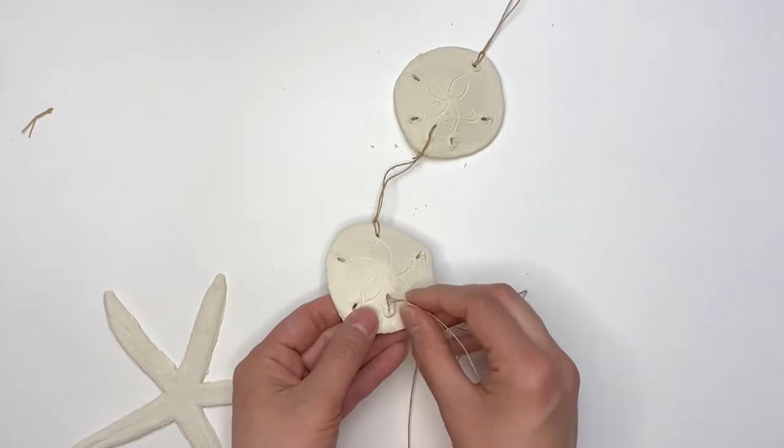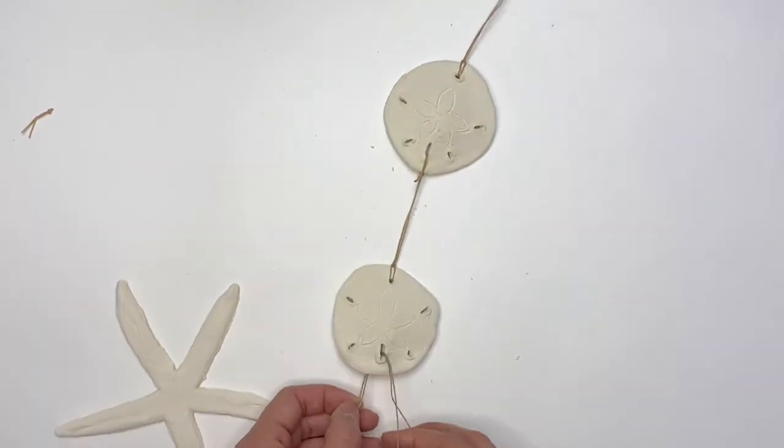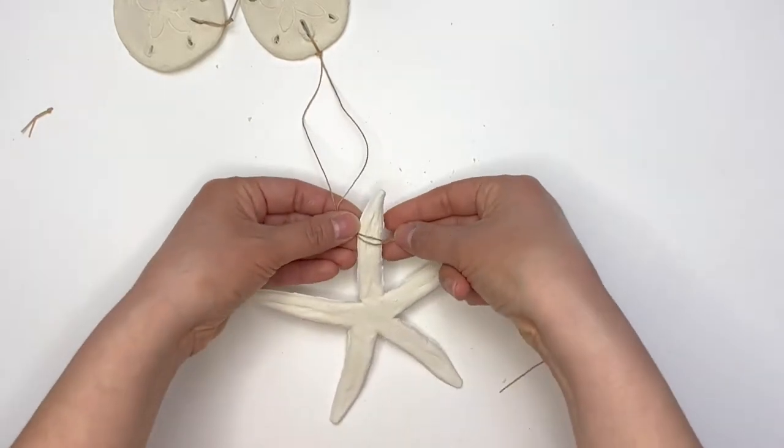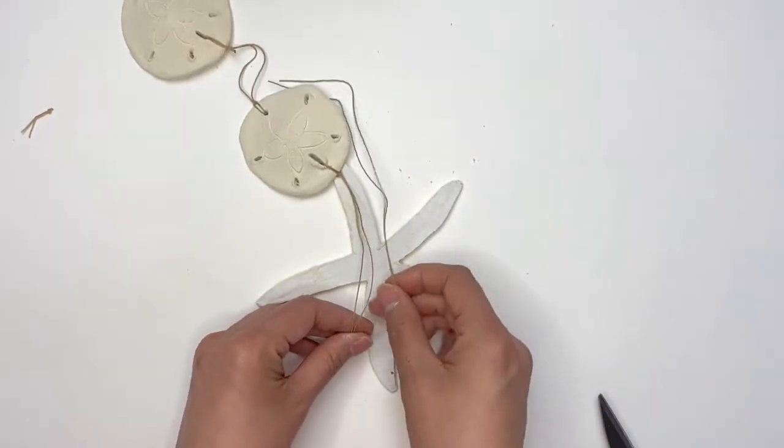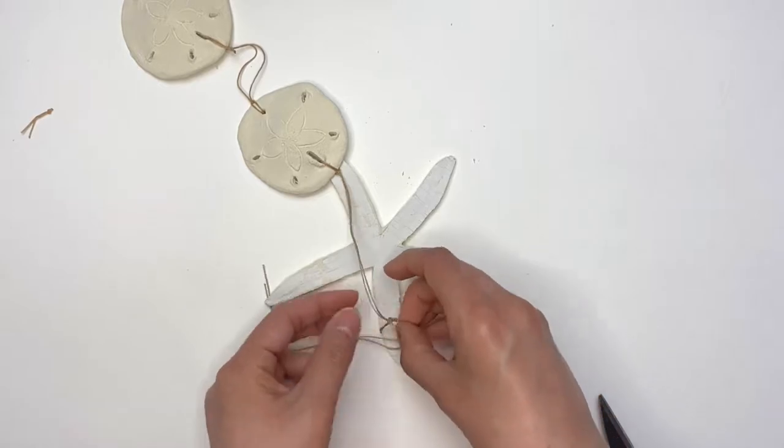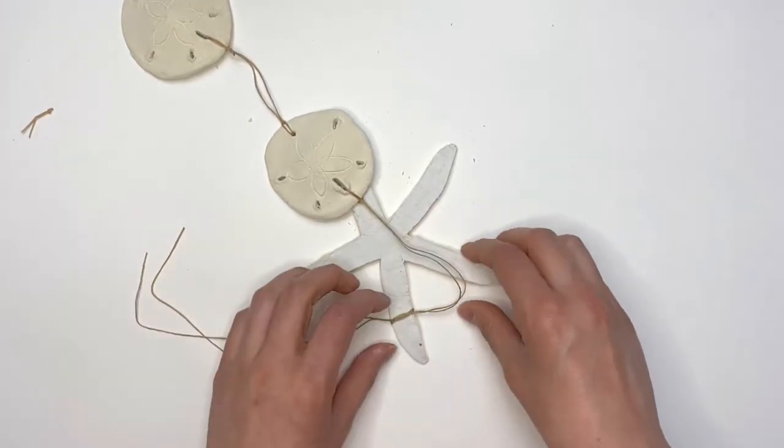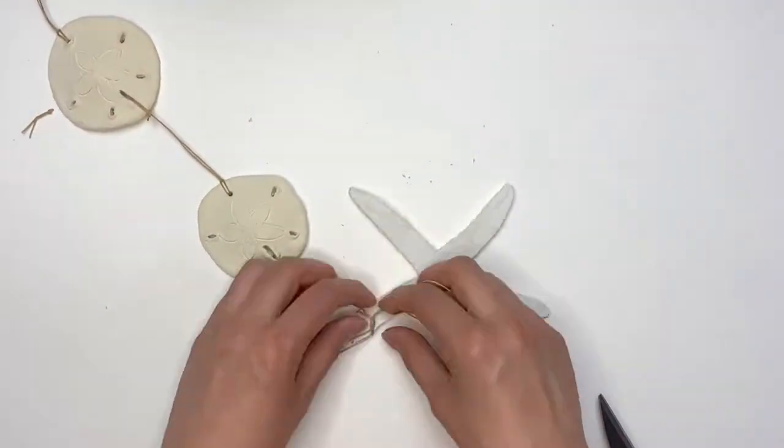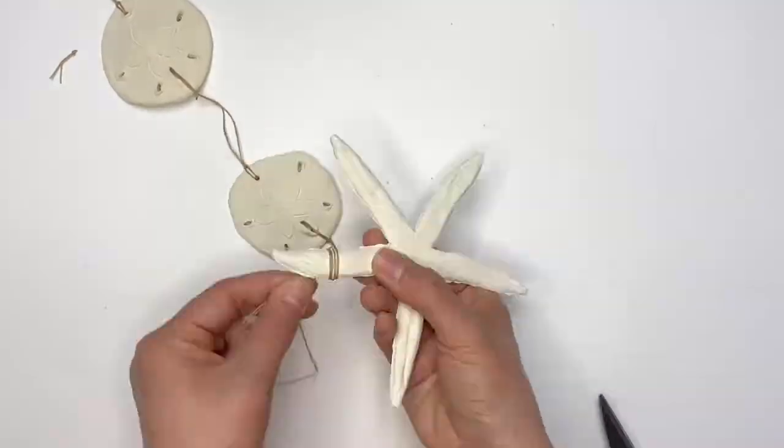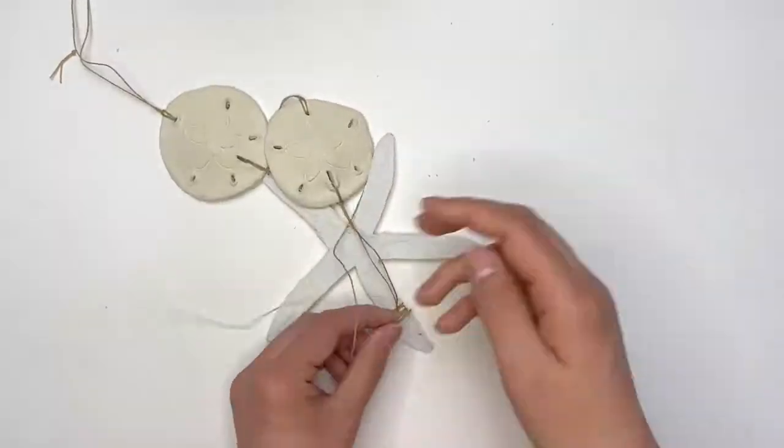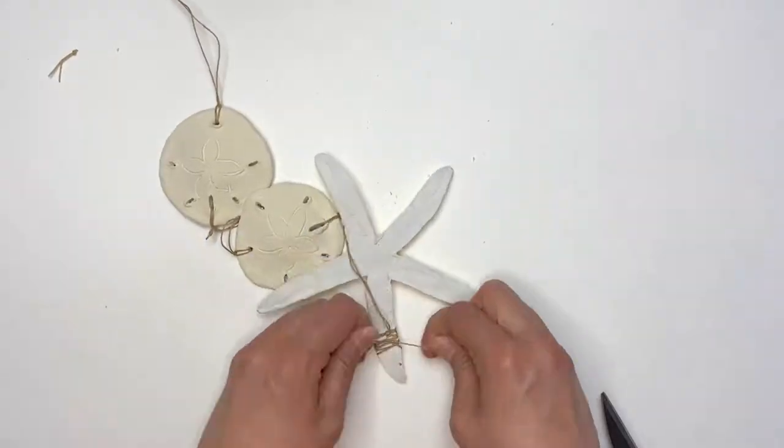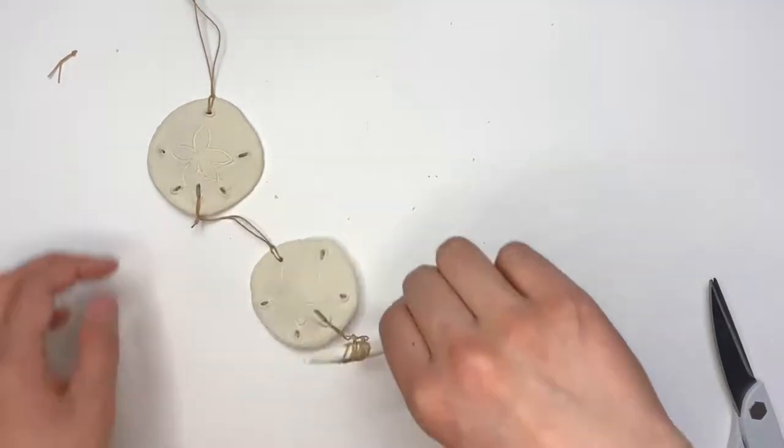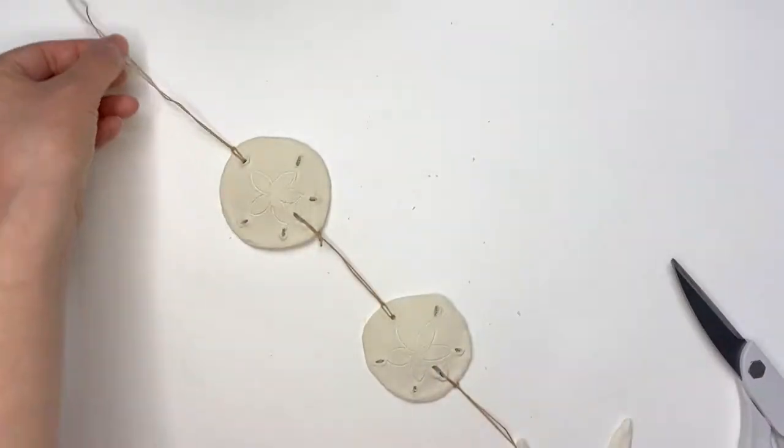To attach my starfish, I grabbed a piece of cord and I attached it to the second sand dollar the same way I did the other cords. And then I grabbed the ends of those cords and I wrapped it around the top of my starfish and did some knots on top, and then I continued wrapping it and knotting it until it was nice and secure. Once everything is tied tight, you can go ahead and cut the extra cords and this project is done.